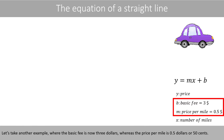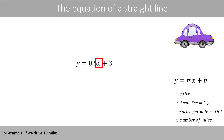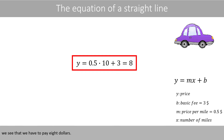Let's take another example where the basic fee is now $3, whereas the price per mile is $0.5 or 50 cents. This is the corresponding equation to calculate the price to rent the car for a certain number of miles. For example, if we drive 10 miles, we see that we have to pay $8.